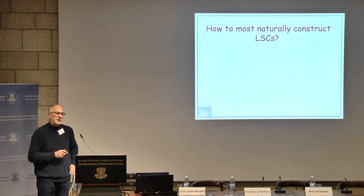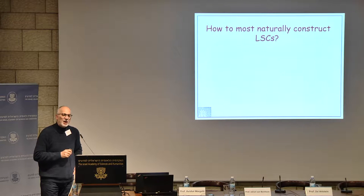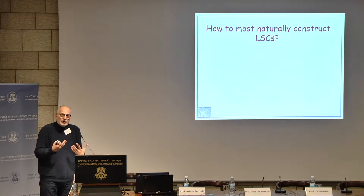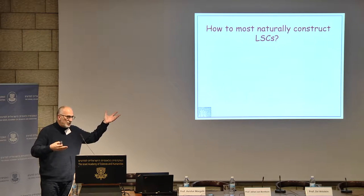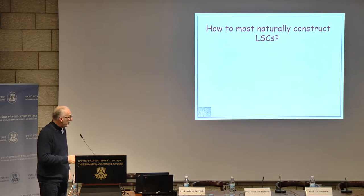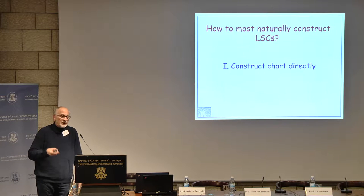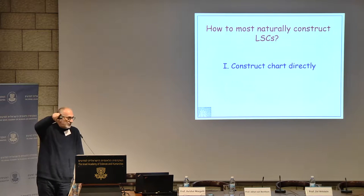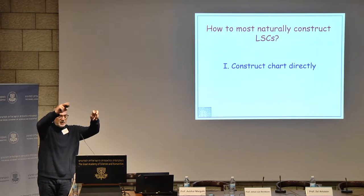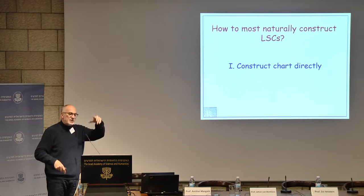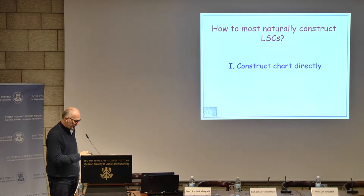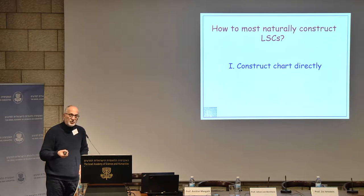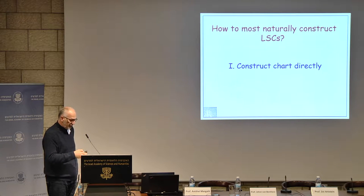What I want to spend some time on is how do you write these programs — how is the discourse carried out, how do I prepare this program of scenarios so that I can run it. One obvious way is to construct the chart directly: you have a graphical editor, you draw arrows, write the names of objects — the user, the keyboard, the button — and produce the program in the language directly. This is the way you would draw something in earlier visual languages like state charts.